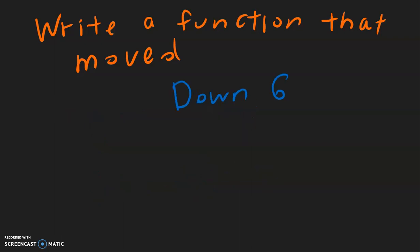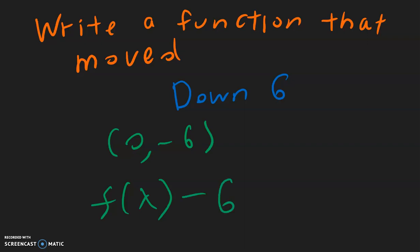For this example, we want to write a function that moved down 6. Notice that we did not talk about moving to the left or to the right, so the x is going to be 0. But the y, down 6, that's going to be a negative 6. Inside, that's 0, so we don't have anything else. But outside, we have a minus 6 — so f(x) minus 6.